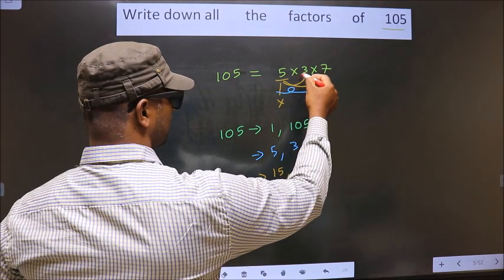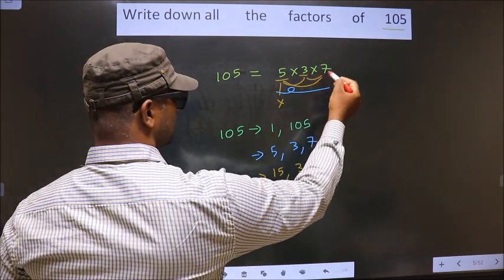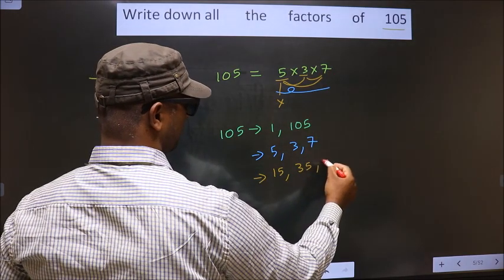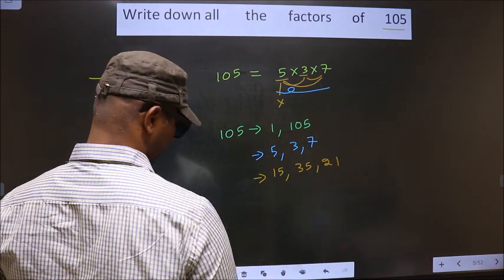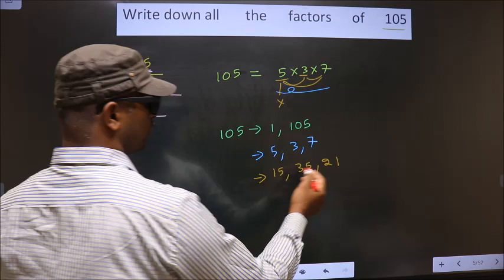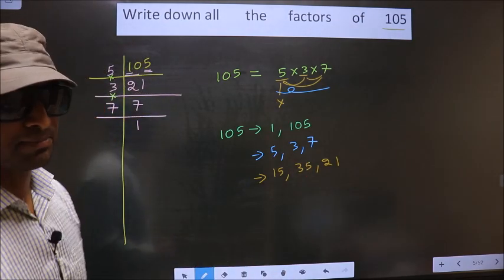Now you leave 5, fix 3, combine with 7. 3 into 7 is 21. No more combinations possible.